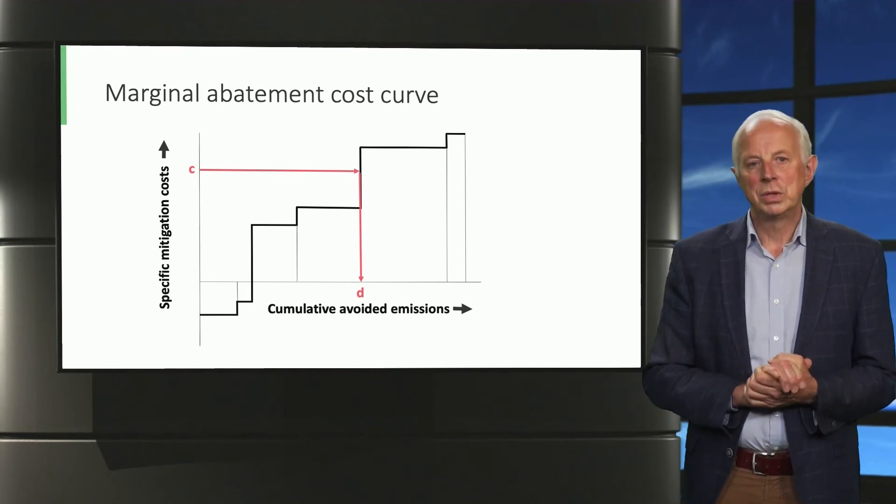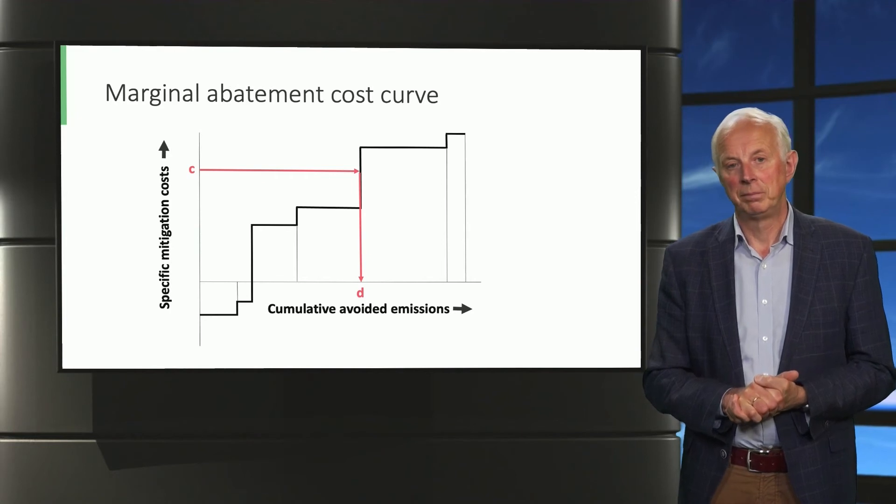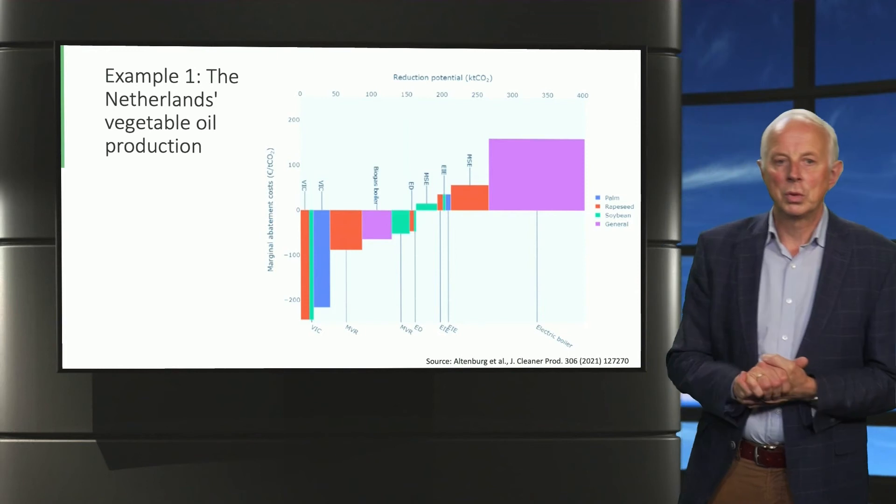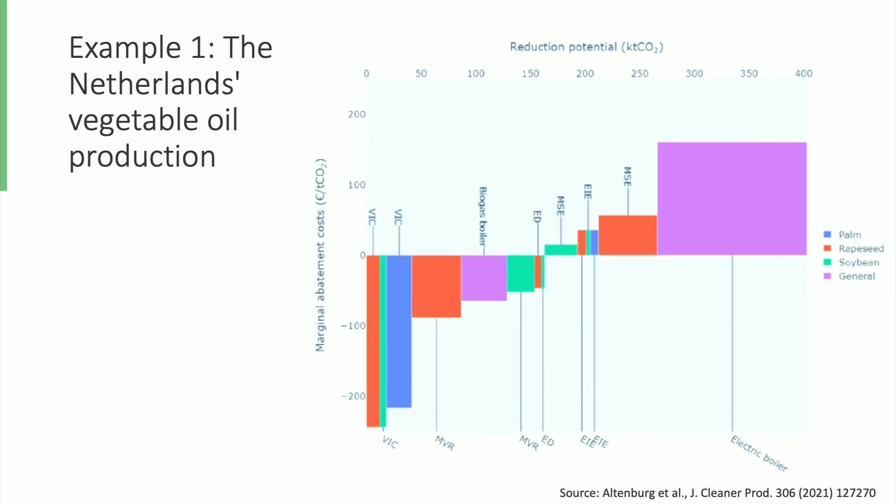Let me now give you some real-world examples of marginal abatement cost curves. This is a marginal abatement cost curve for vegetable oil production in the Netherlands. It is a relatively small industrial sector within the food industry, but with a serious emission impact.